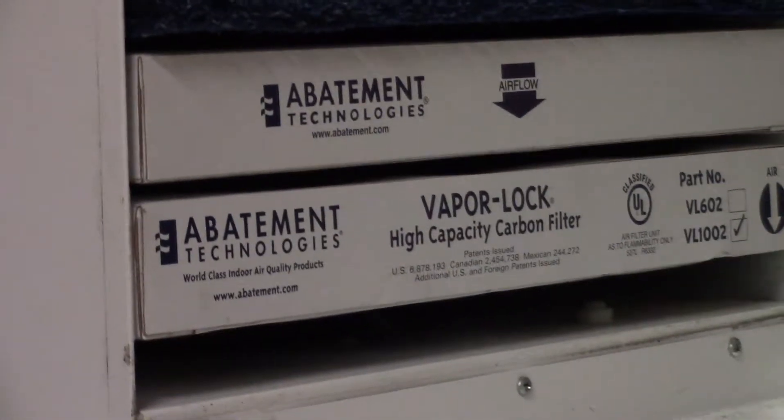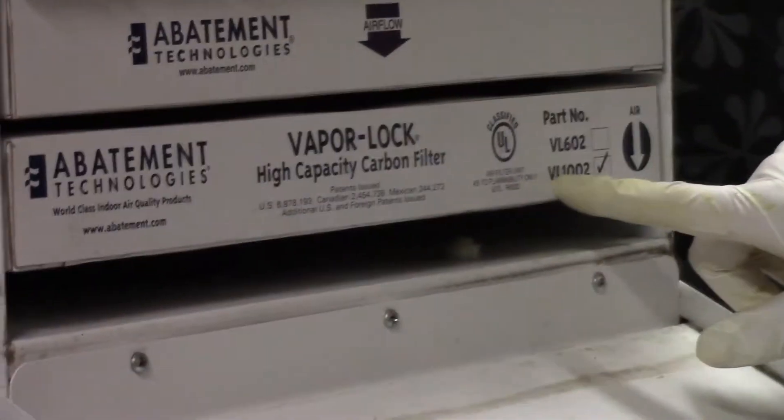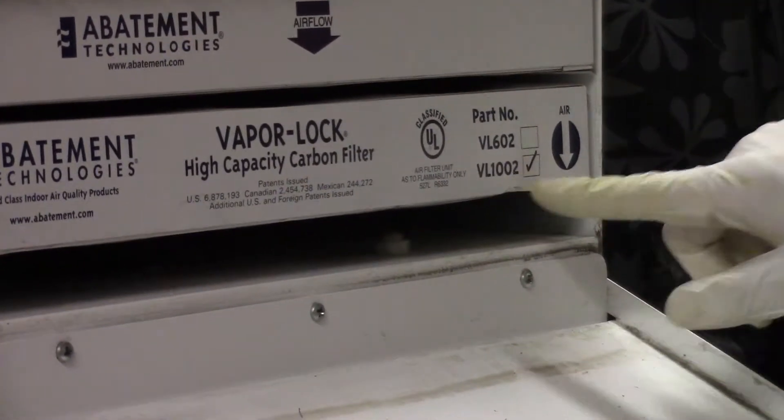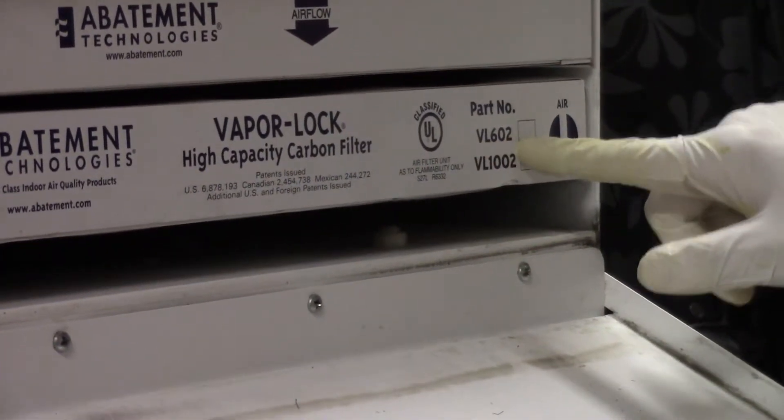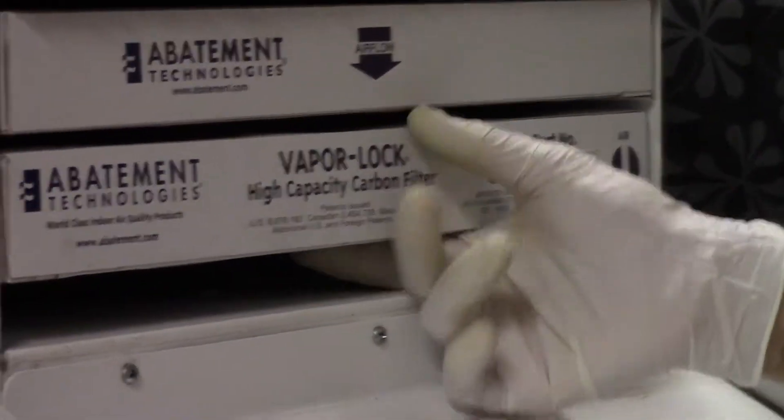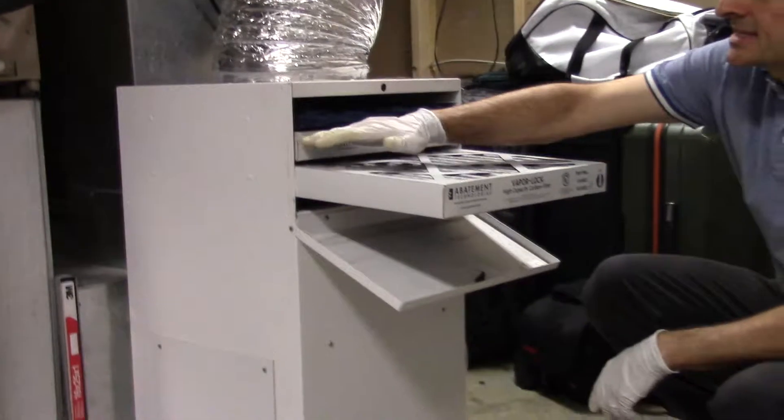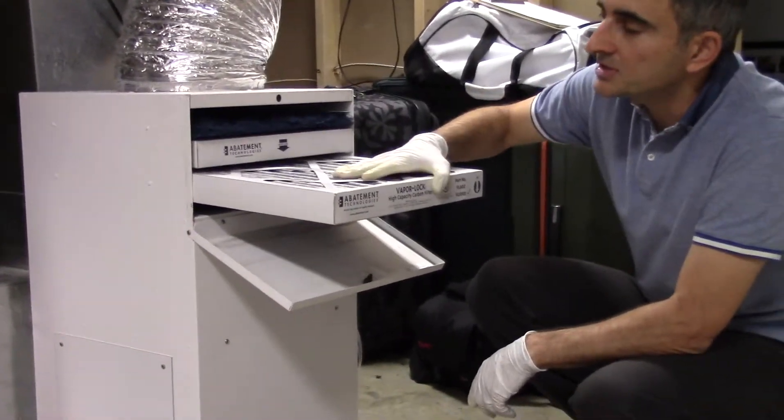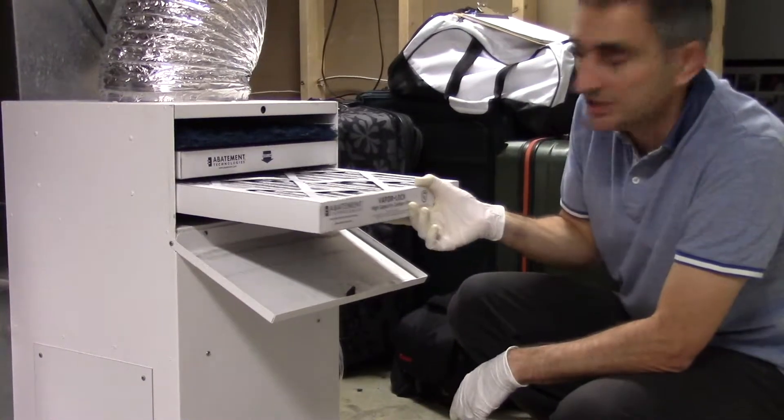In the case of the CAP 1200, the vapor lock filter 1002 is for the 1200 model. The VL602 is for the 600. In the 1200, this filter lasts one year. In the 600, it's in slot 2 and it lasts 6 months. So this filter has been in only for 6 months, so we're not going to change it today.